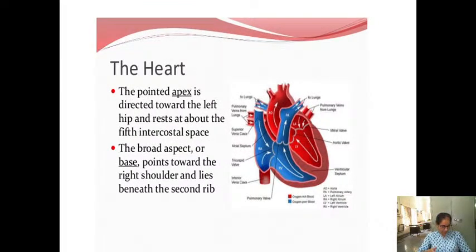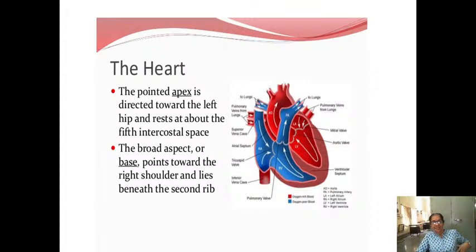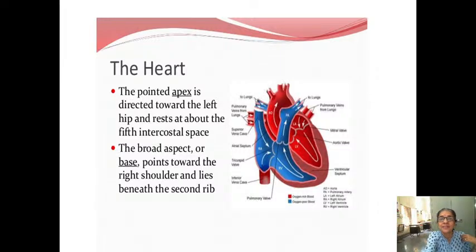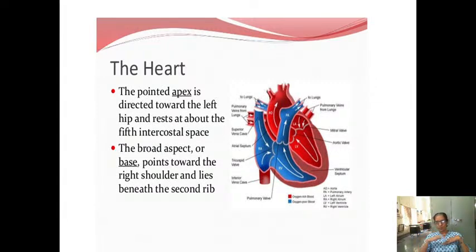How is this heart positioned? The apex is directed towards the left hip, around the fifth intercostal space. If you count the intercostal spaces, the apex is at the fifth intercostal space. The broad aspect, or the base, is pointed towards your right shoulder and lies behind the second rib. The narrow part is the apex, directed towards your left hip.